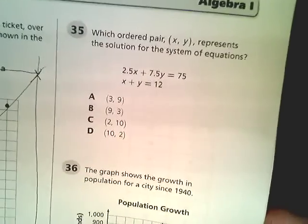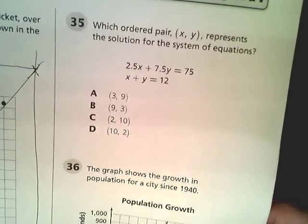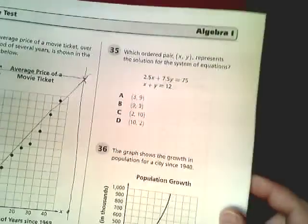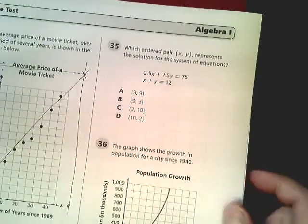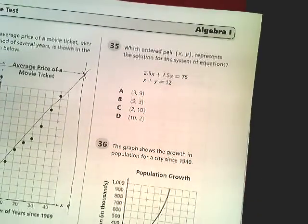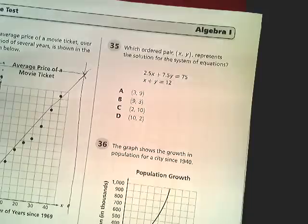This question asks me to find which ordered pair represents the solution for the system of equations. There's about four ways we can do this. We can convert them all into slope-intercept form, or y equals form.